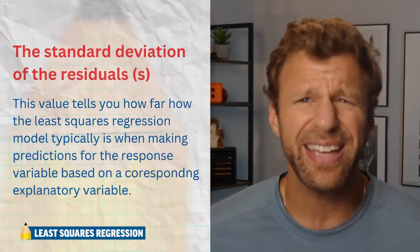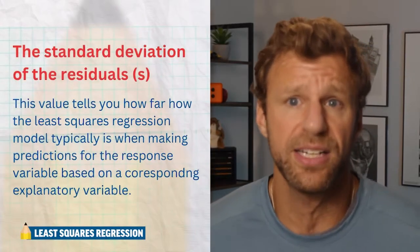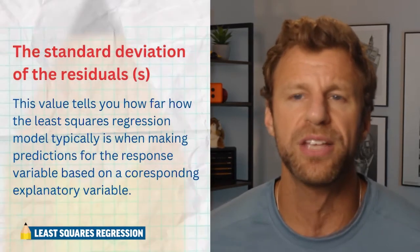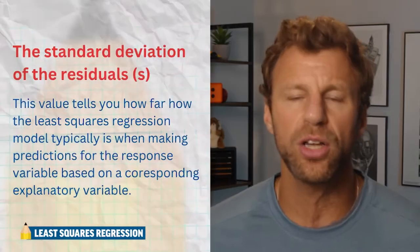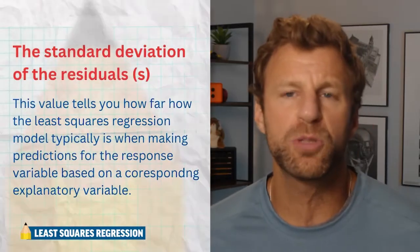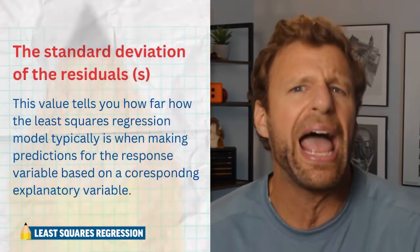If your coefficient of determination is only about 40%, that shows they're not strongly connected, and any prediction about the response from the explanatory variable won't be as reliable as if it were 99%. The last major value needed is called S, the standard deviation of the residuals. It is the standard deviation of your residual values. What it tells us is more important: it tells us that when we use our linear regression model to make predictions for y, how typically off those predictions are.